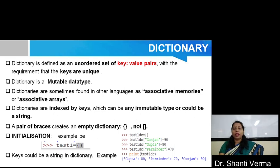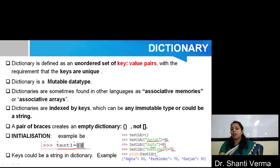For example, if you want to declare one null dictionary test1, you can write test1 equals to open and close curly braces. Basically, if you want to create one dictionary with three key-value pairs: the first key is 'gunjan' with associated value 90, second is 'gupta' with value 80, and third is 'permindar' with value 70. So if you print test1, you can see the key and the value associated with each key.